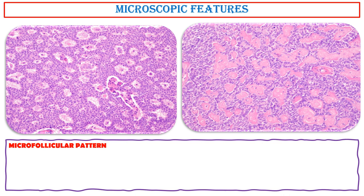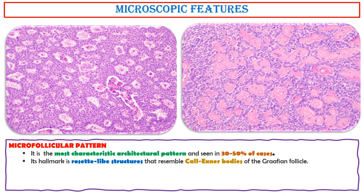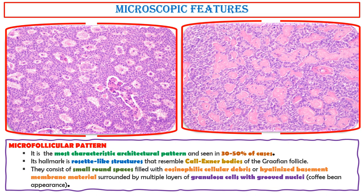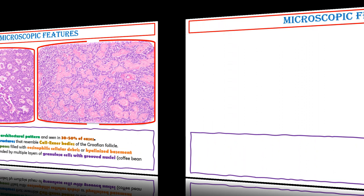Microfollicular pattern. It is the most characteristic architectural pattern, seen in 30 to 50% of cases. Its hallmark is rosette-like structures that resemble Call-Exner bodies of the Graafian follicle. They consist of small round spaces filled with eosinophilic cellular debris or de-alienated basement membrane material, surrounded by multiple layers of granulosa cells with grooved nuclei — that is, the coffee bean appearance.